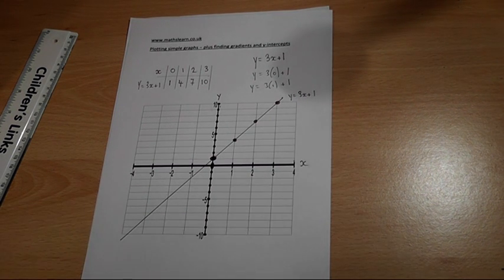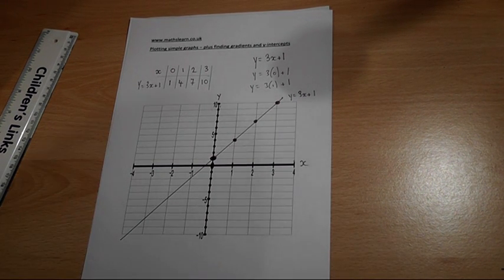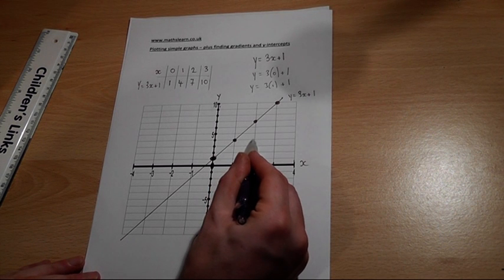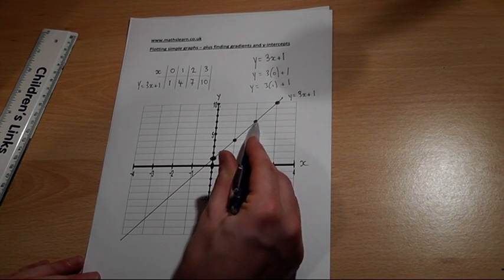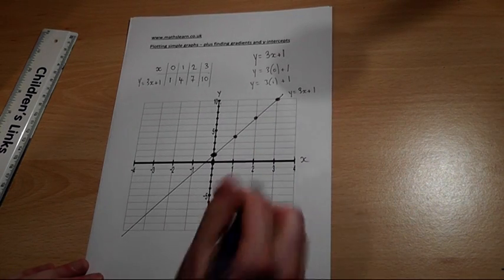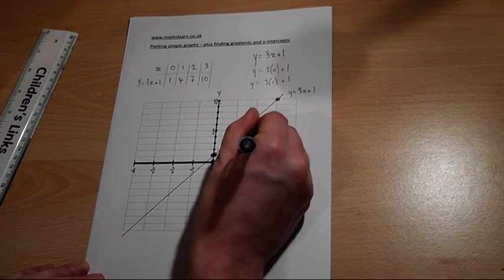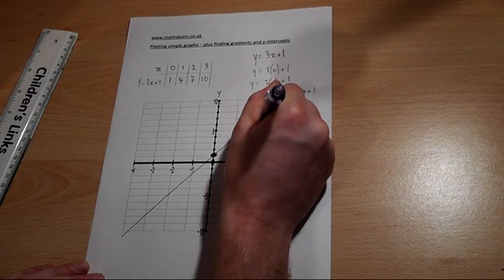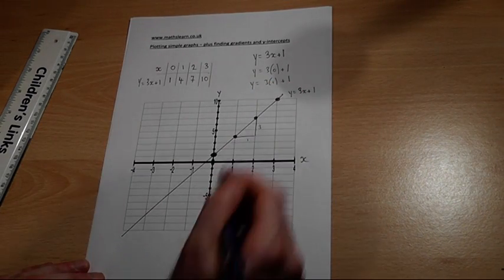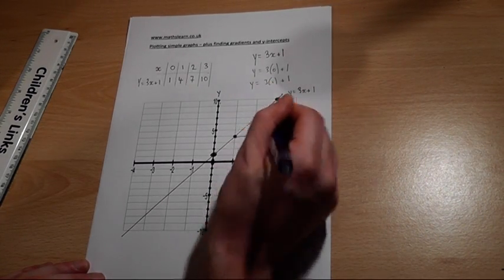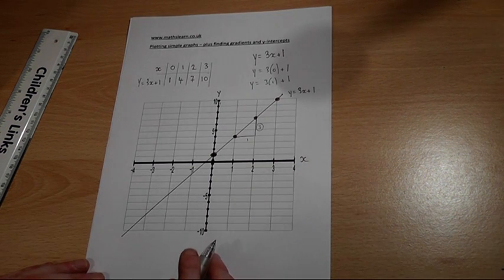But also one more observation. For every 1 across I go, this graph goes up by 3. Across 1, up 3. And this number here is referred to as the gradient.